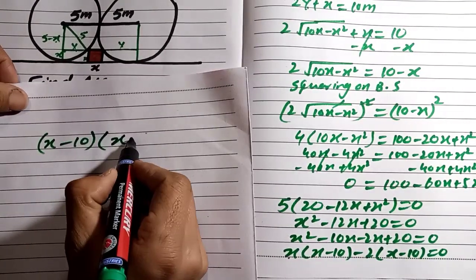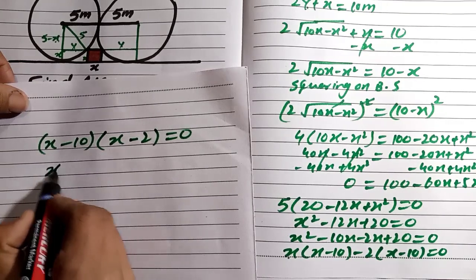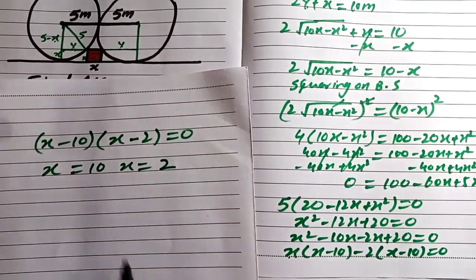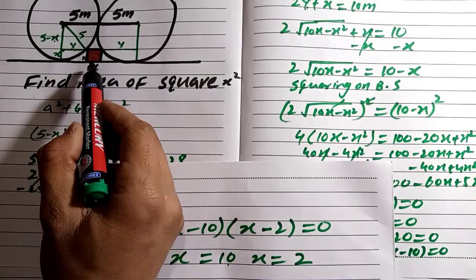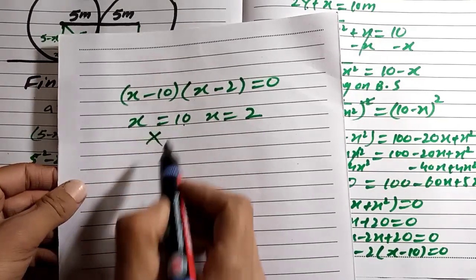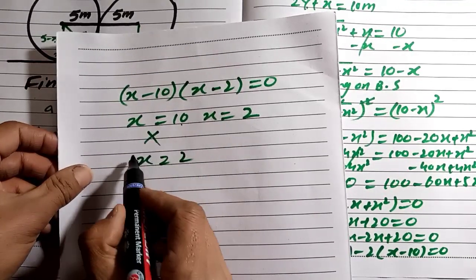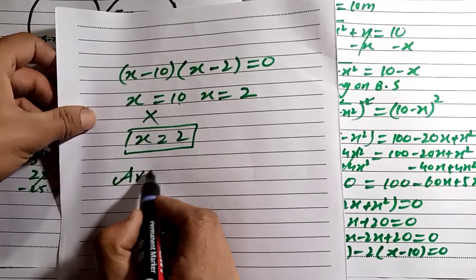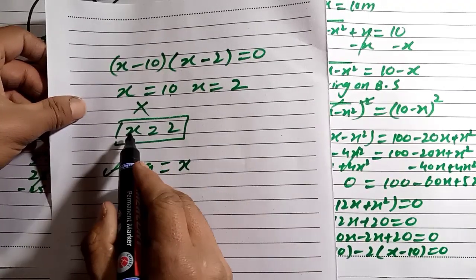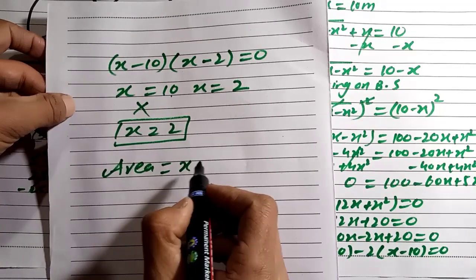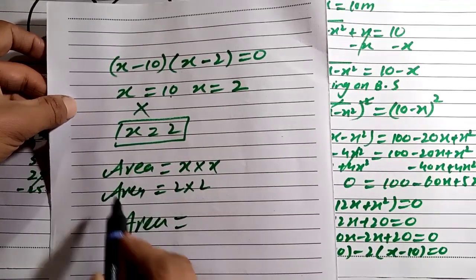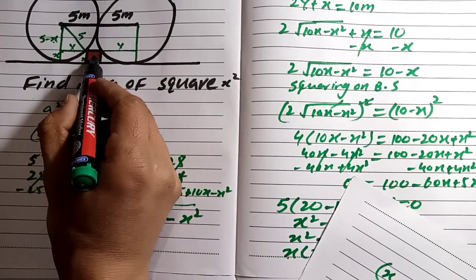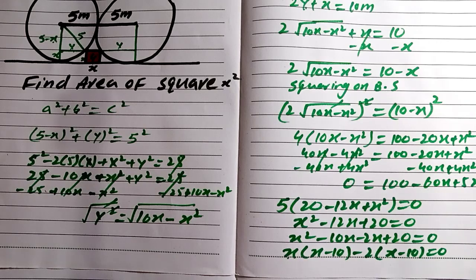We have two values of X: X equals 10 and X equals 2. We cancel the greater value of 10 because we are looking for the smaller square, so our value of X equals 2. As we know, the area of a square equals the side length squared, so X squared equals 2 squared equals 4. Our final answer: the area of the smaller square is equal to 4 square meters.